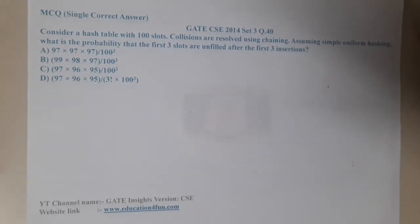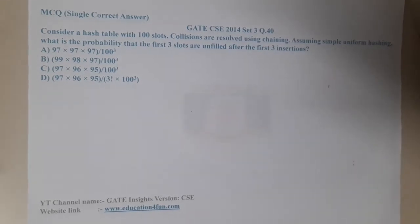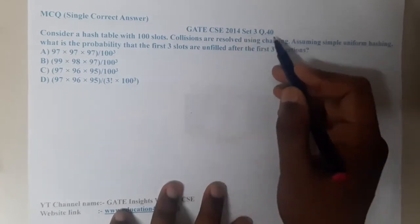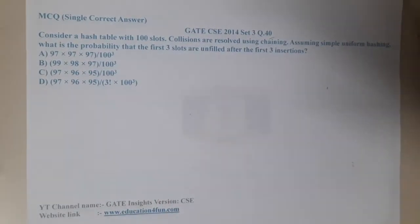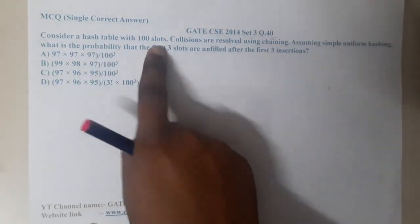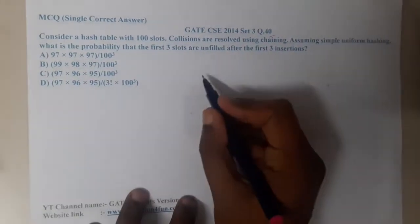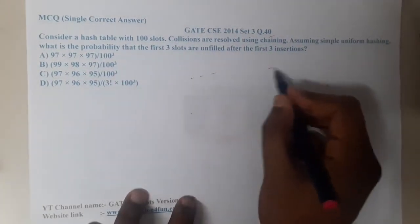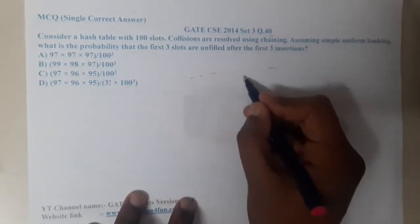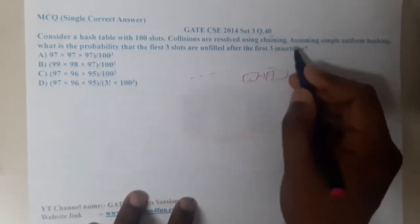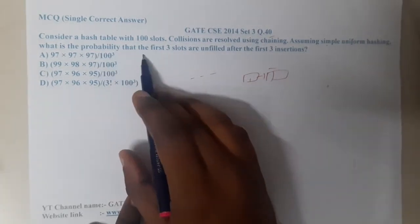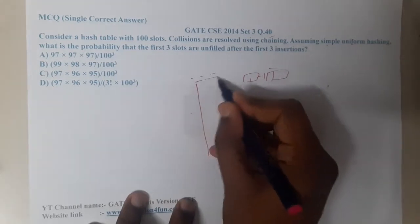Hello guys, we are back with our next lecture. The question is GATE CSE 2014, Question Set 3, Question 40. Consider a hash table with 100 slots — so there are in total 100 slots. Collisions are resolved using chaining. Assuming simple uniform hashing, what is the probability that the first three slots are unfilled after the first three insertions?